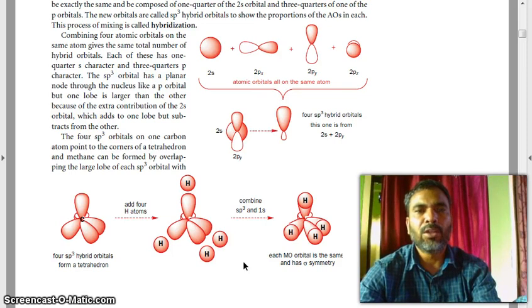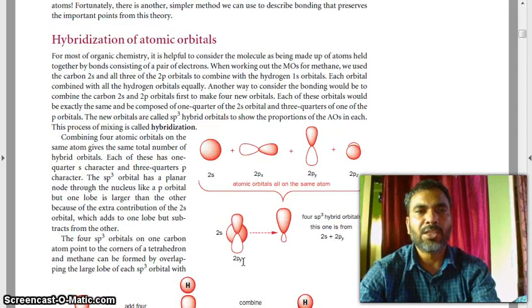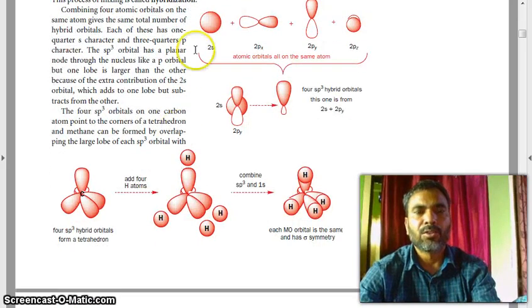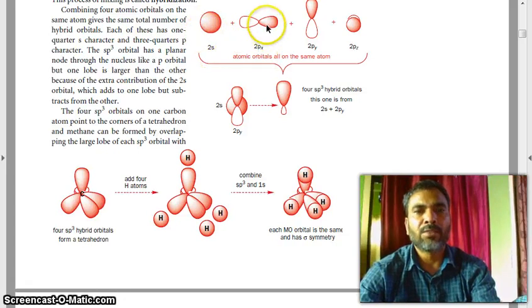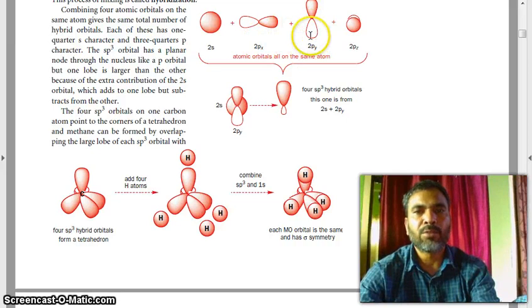Today in this video, I am going to explain about hybridization of atomic orbitals. Look at here, this is the 2S and you know the S orbital is spherical, and this one is 2Px, this one is 2Py, and this one is 2Pz.